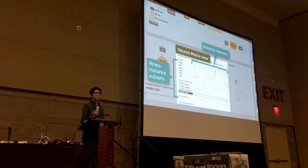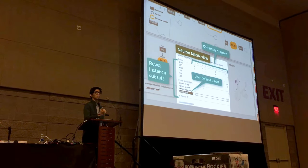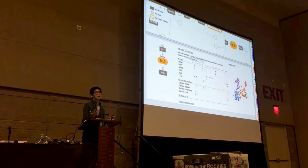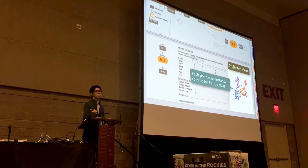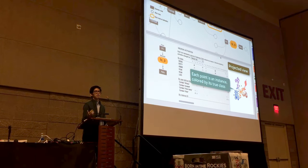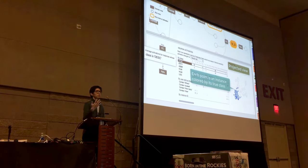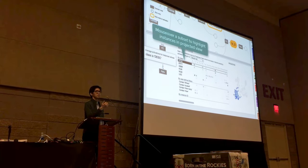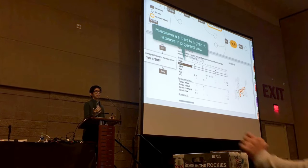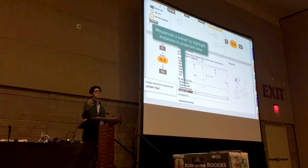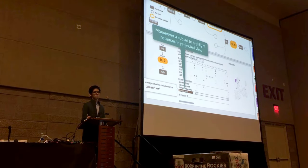Users can also specify user-defined subsets based on whether text contains particular phrases. On the right side of the panel is a projected view where each point represents an instance colored by its true class — six colors for six classes. This view is interlinked with the matrix view, so when users mouse over one of the subset rows, they can see how the corresponding instances are distributed in the projected space.